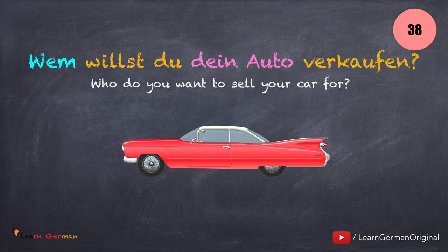Here is the next sentence: Wem willst du dein Auto verkaufen? In this case, wem will be the Dativobjekt. Jemandem etwas verkaufen. This can also be used without the Dativobjekt.